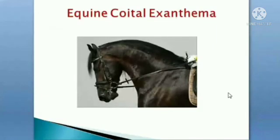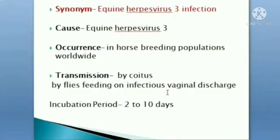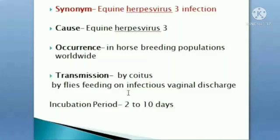Equine Herpes Virus 3 causes Equine Coital Exanthema, caused by Equid Alphaherpesvirus 3. The classification remains the same, with species Equid Alphaherpesvirus 3. It occurs in the breeding population of horses worldwide. Transmission is by coitus or by flies feeding on infectious vaginal discharge.